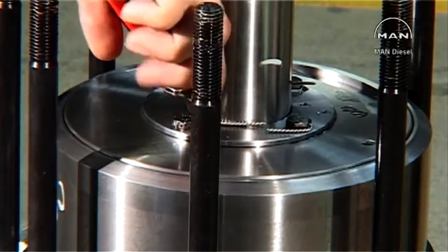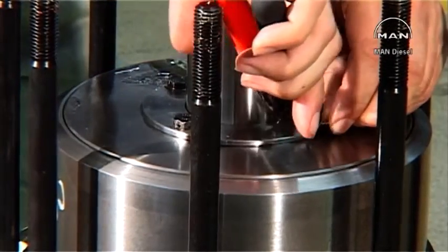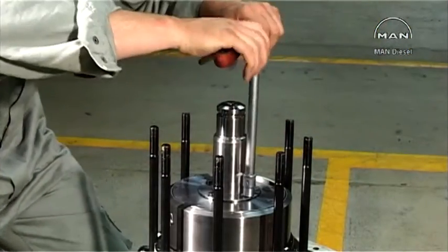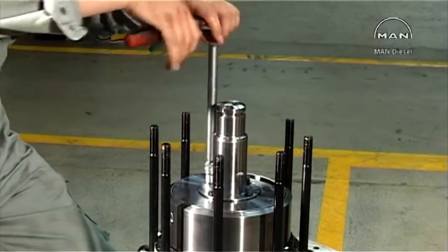Use a diagonal cutter to remove the safety thread from the four bolts on the top flange. Remove the bolts and the flange.